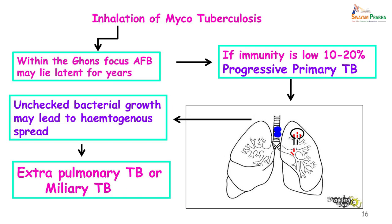If this progressive primary tuberculosis goes unchecked, the bacteria can spread hematogenously. Remember, they have the ability to live within the macrophages — when they are ingested by the macrophage you get a phagosome; they resist destruction by the lysosomal enzymes and so they remain within the phagosome and multiply. This is then carried to different parts of the body and the patient can end up with extrapulmonary tuberculosis or miliary tuberculosis.